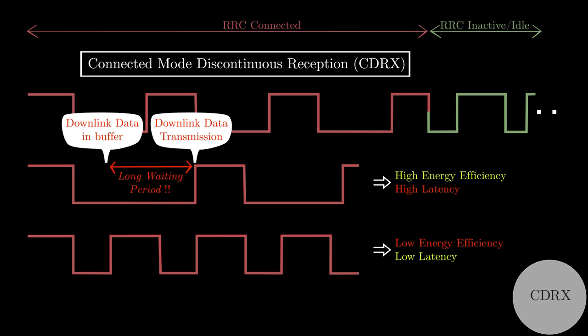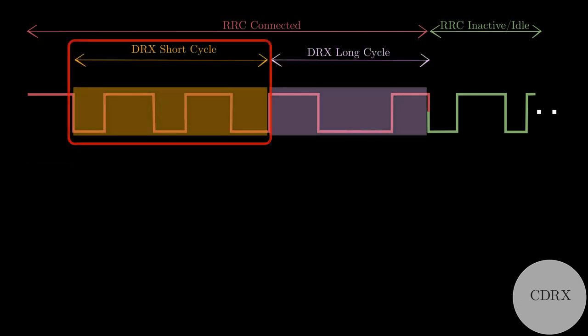To improve latency without compromising the energy efficiency, DRX short cycles are introduced just after UE enters into sleep. This is because there is high probability for data transfer just after the UE goes into sleep. So UE wakes up and sleeps in a short cycle for some duration, then switches to long cycle if there is still no data transfer.